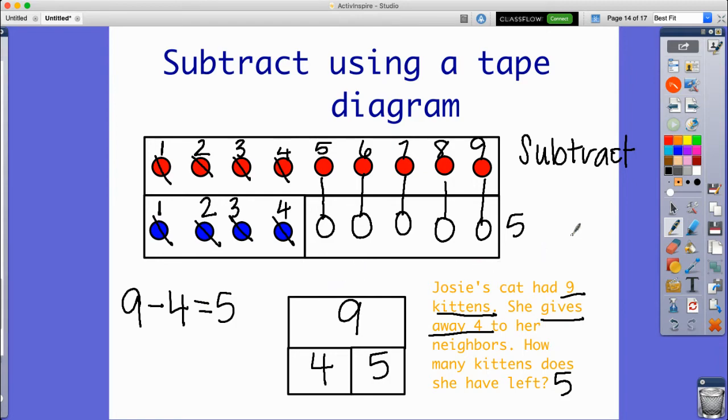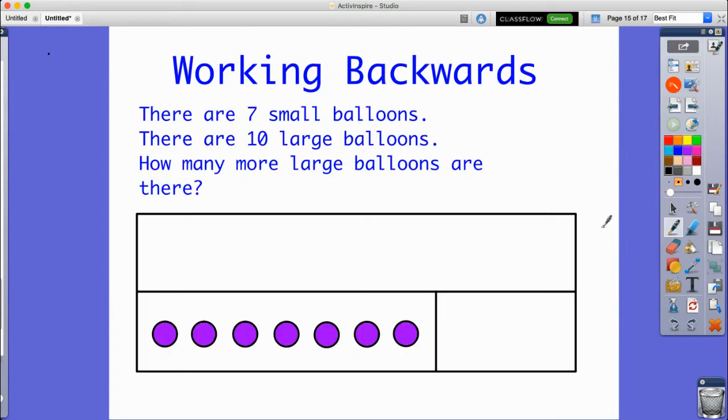Let's look at another example. This one says, there are seven small balloons. There are ten large balloons. How many more large balloons are there? So I have seven small and ten large.